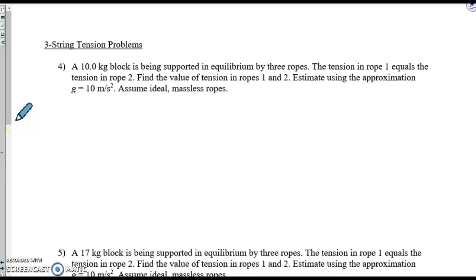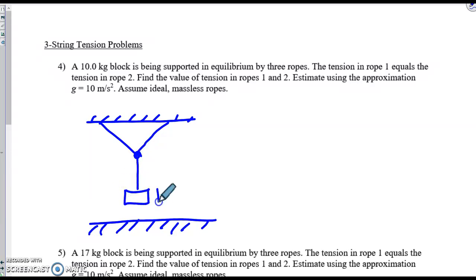Here's a problem involving tension. We have a ceiling and a floor, and a system of ropes has been set up. We have two ropes at the same angle, and hanging down is a third rope connected to a block whose mass is 10 kilograms. This angle is given as 40 degrees, and this is the same angle on the other side.